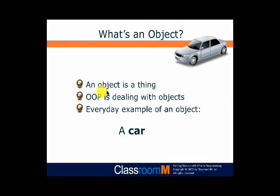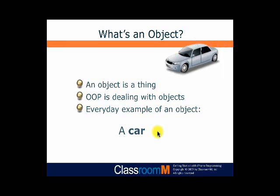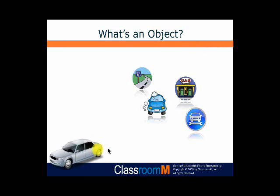A car is a thing, and an object in object-oriented programming terminology you can think of as a thing also. Object-oriented programming is about dealing with objects, and we're going to take as our example here of an object, a car. Now, a car comes from the factory, gets manufactured, and car is a very general term that could refer to all different types of cars.